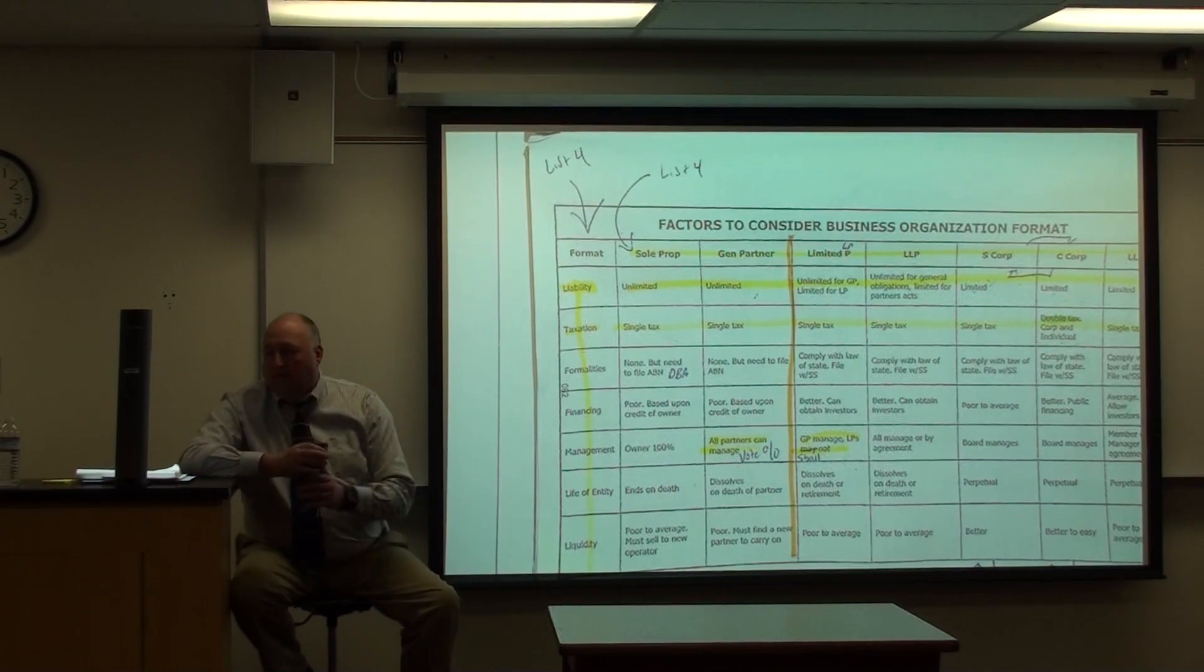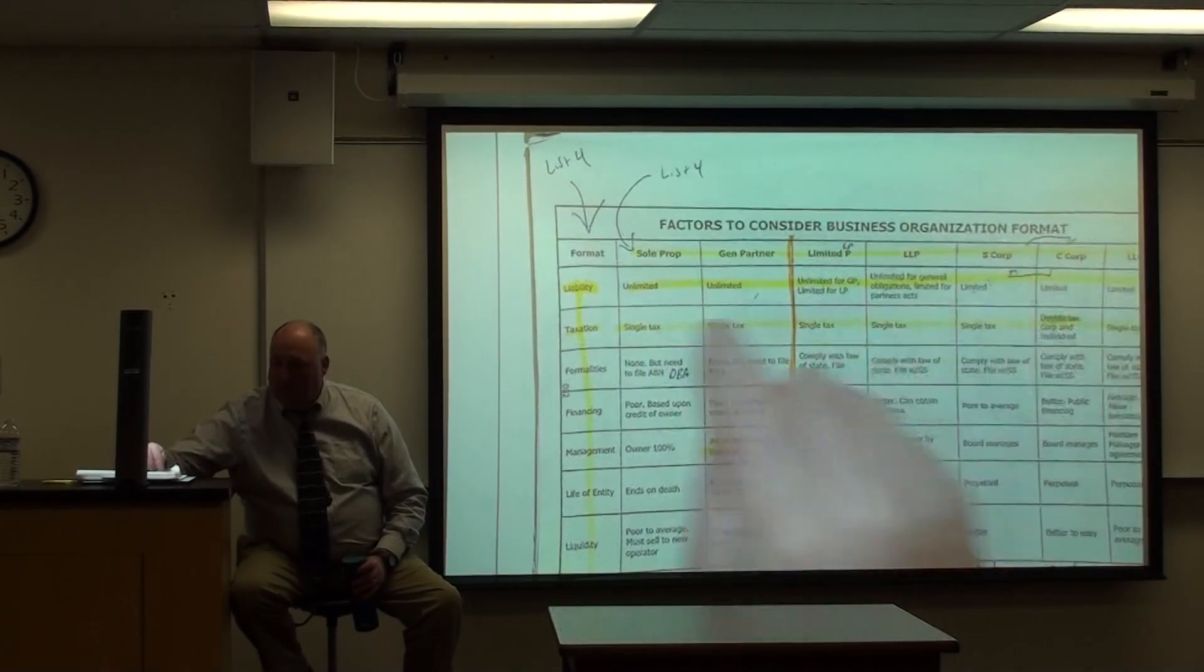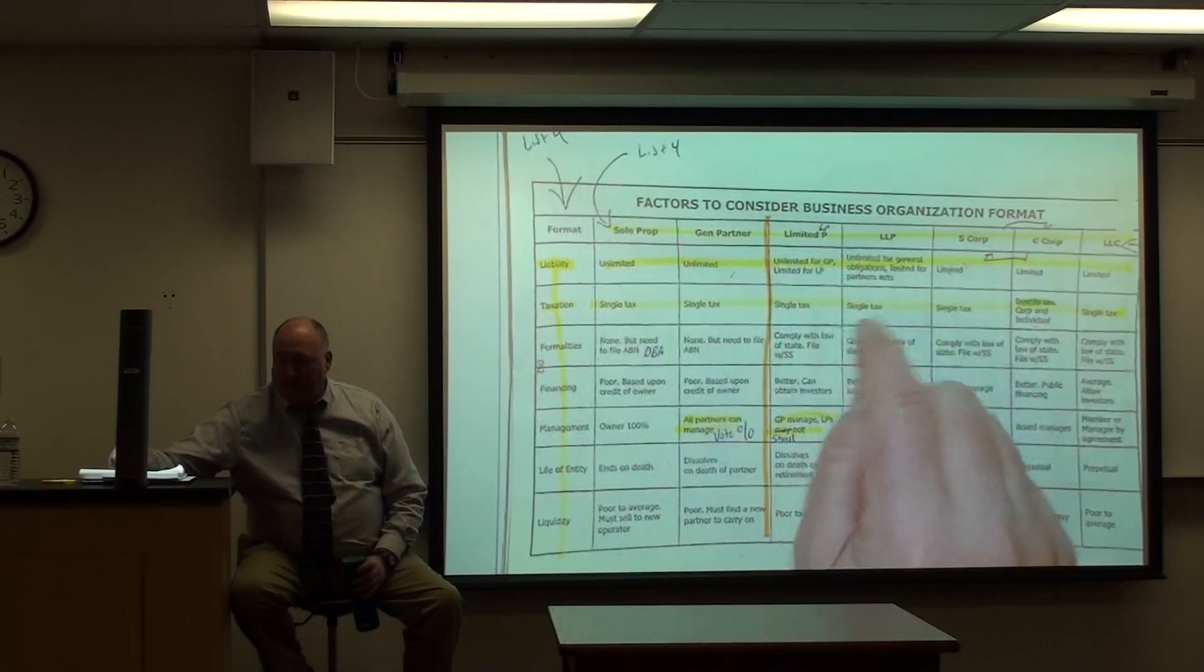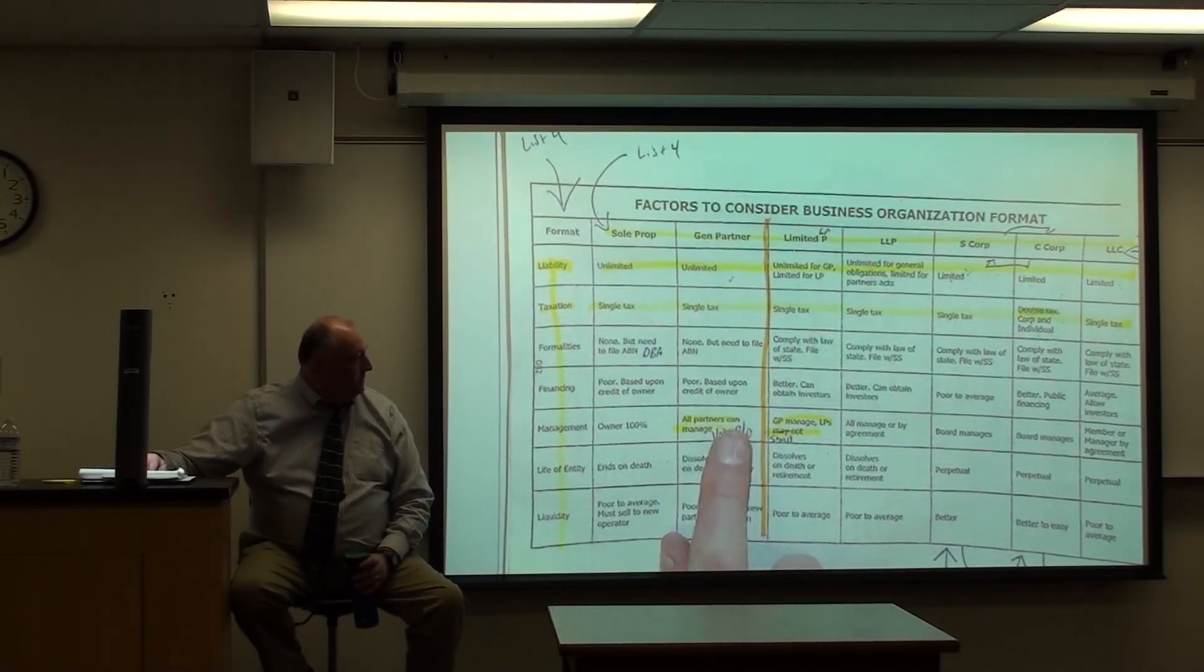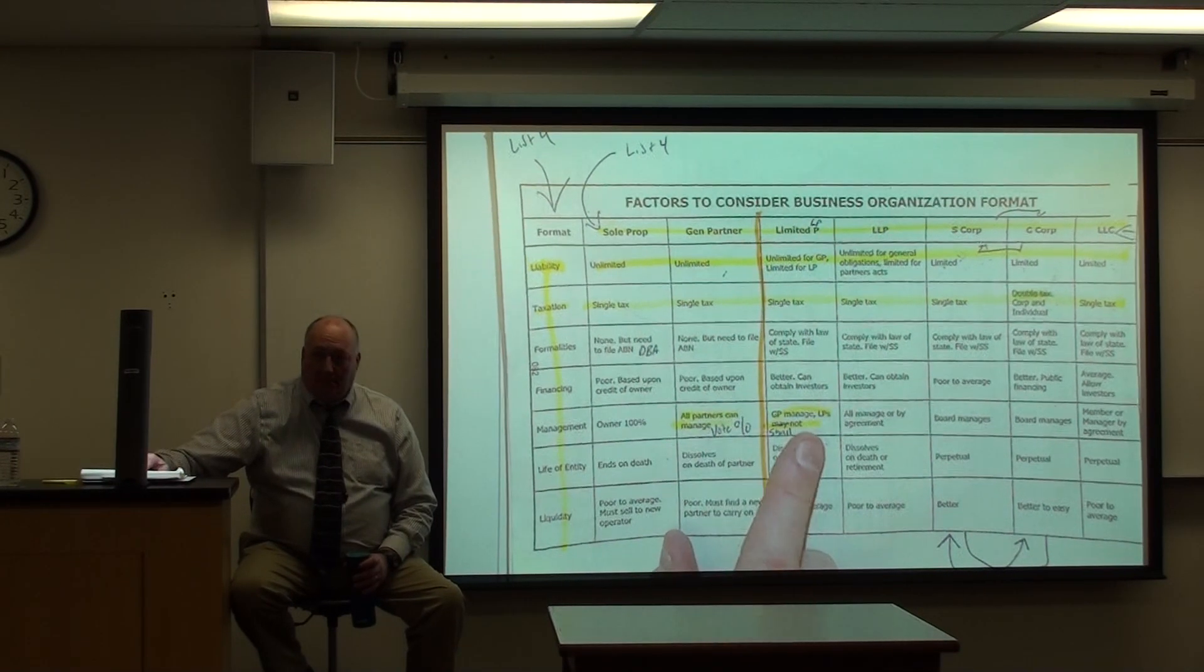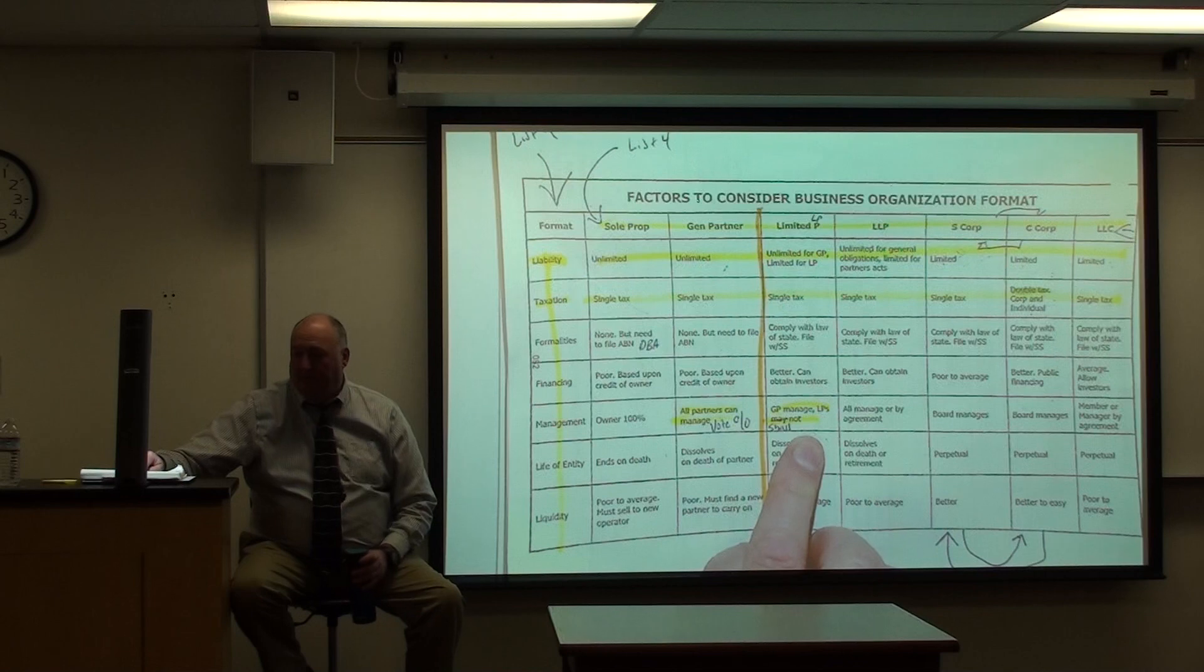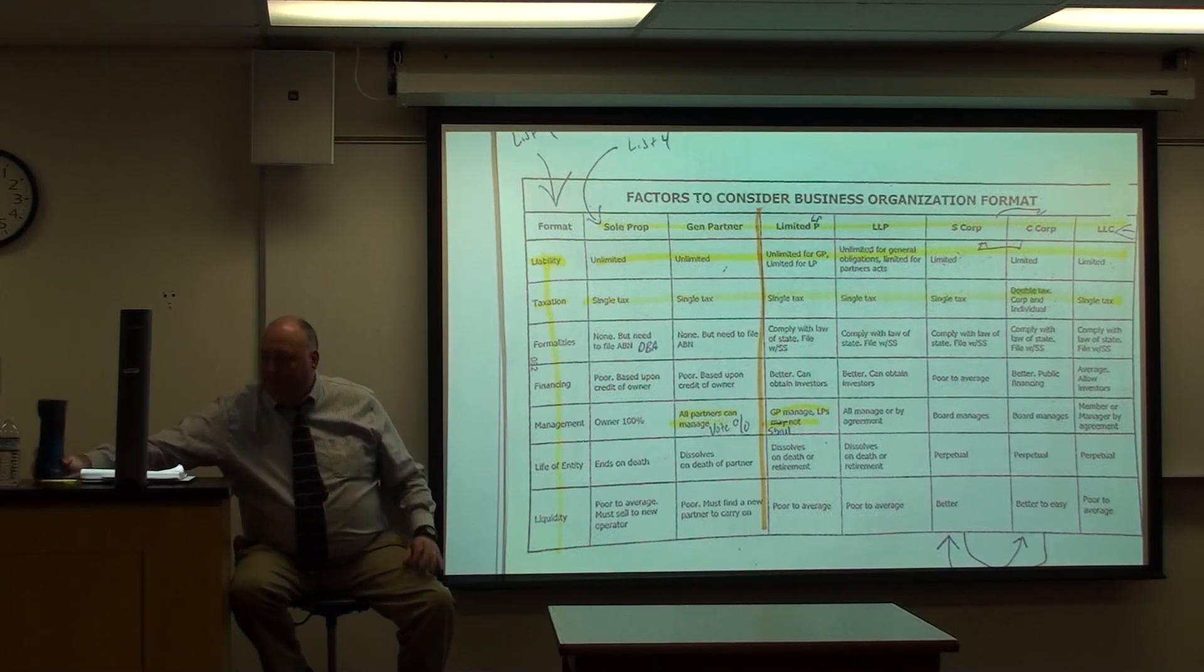Now again, way more detail than I'll test you on. Focus on these two rows, which have liability, which don't. And the double tax versus single tax. And then these two boxes right here. General partnership, all partners get a vote. Limited partnership, you have two different roles. General partner manages. Limited partners don't. They can't do management.